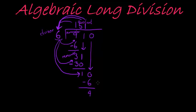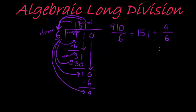Now, there's nothing to bring down anymore, and the 6 can't divide into the 4, which means I'm done. That means if I take 910, and I divide it with 6, my answer will be 151, but there will be 4 left that still has to be divided by 6.